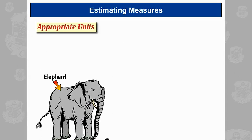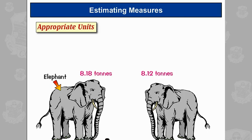Okay, here's an elephant. Now, I'd measure his weight or mass in tonnes, unless maybe I needed to be more accurate. For example, if I'm comparing his weight with the weight of his friend here, they're both about 8 tonnes, but it's easier to compare them in kilograms. That's a difference of 60 kilograms.